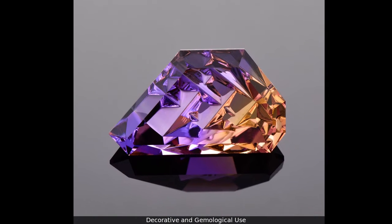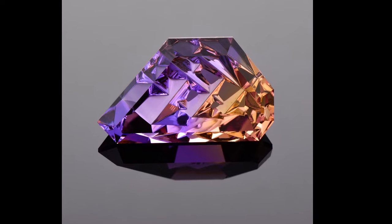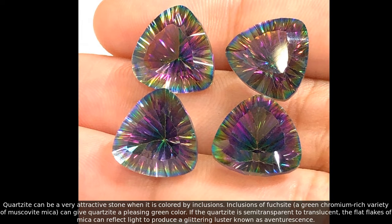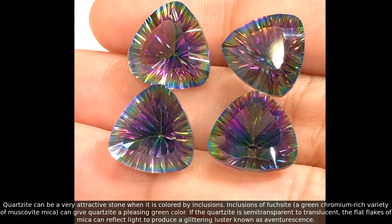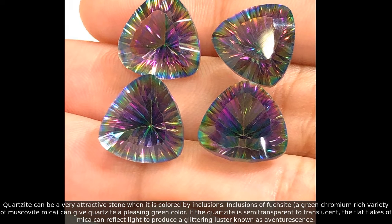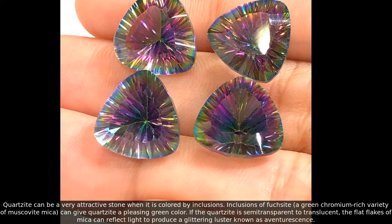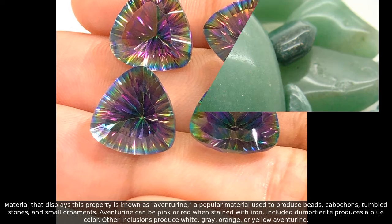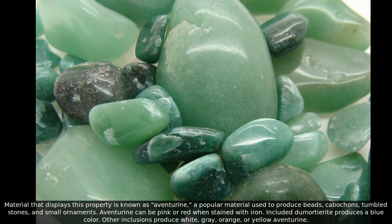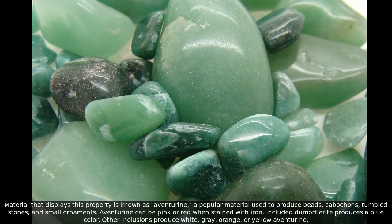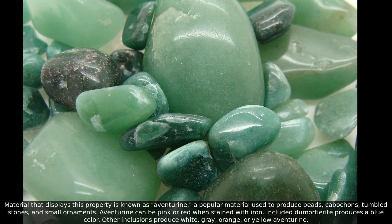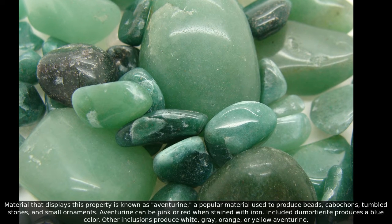Decorative and gemological use. Quartzite can be a very attractive stone when it is colored by inclusions. Inclusions of fuchsite, a green chromium-rich variety of muscovite mica, can give quartzite a pleasing green color. If the quartzite is semi-transparent to translucent, the flat flakes of mica can reflect light to produce a glittering luster known as aventurescence. Material that displays this property is known as aventurine, a popular material used to produce beads, cabochons, tumbled stones, and small ornaments. Aventurine can be pink or red when stained with iron. Included dumortierite produces a blue color. Other inclusions produce white, gray, orange, or yellow aventurine.